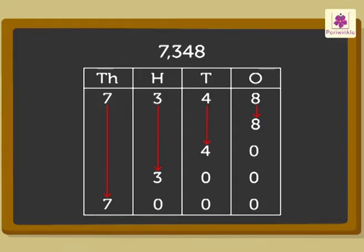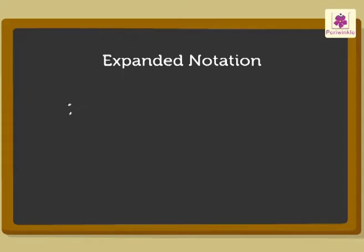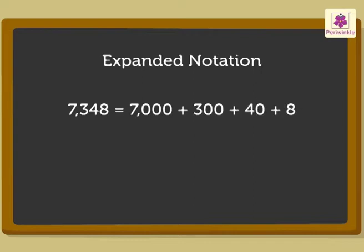Now, to get the expanded form, we write this number as the sum of the place value of its digits.